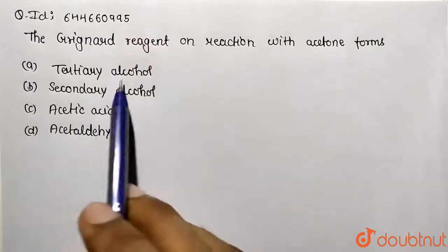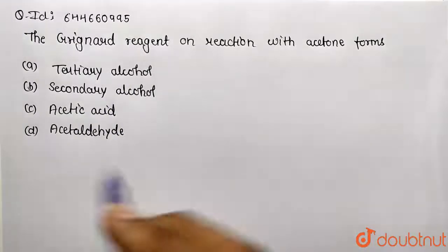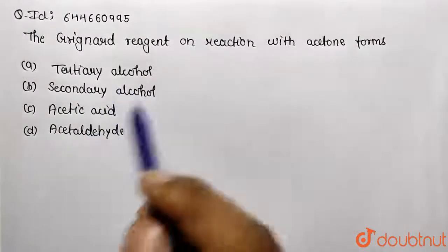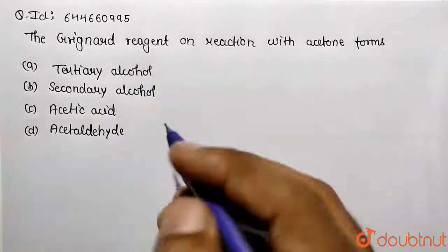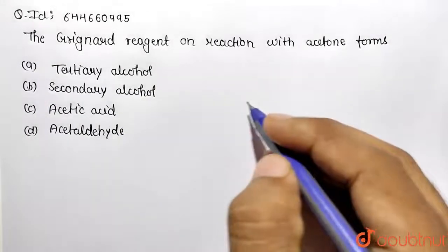we need to answer: the Grignard reagent on reaction with acetone forms which of the following - tertiary alcohol, secondary alcohol, acetic acid, or acetaldehyde? So first of all, write the Grignard. What is our Grignard?